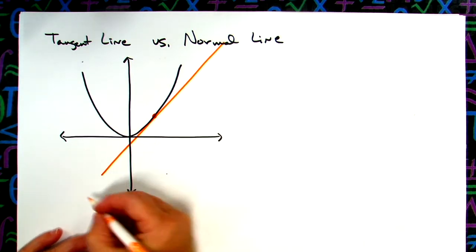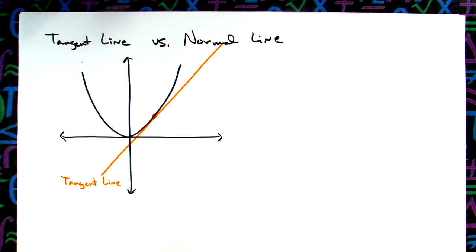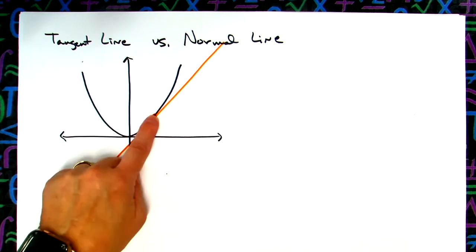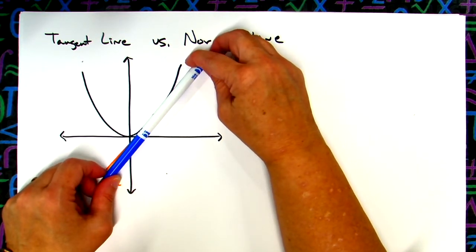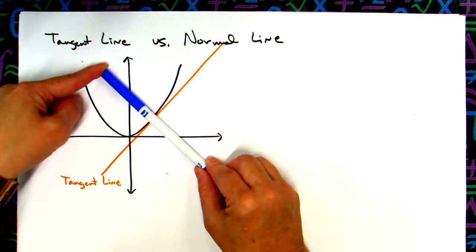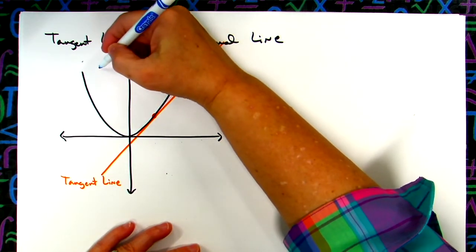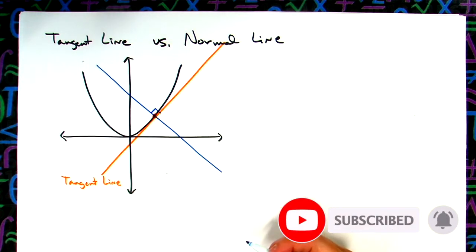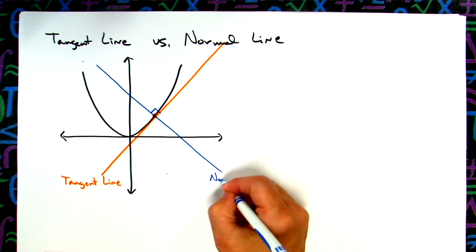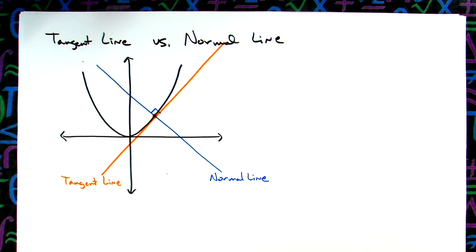A normal line is simply a line that is perpendicular to the tangent line — that's all it is. Now if I know a point on the line and I know the slope of that tangent line, then it's negative reciprocals for perpendicular lines. I write a new equation using the perpendicular slope — the negative reciprocal slope — going through that same point. So the normal line goes right through that point at a right angle to the tangent line.